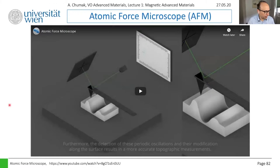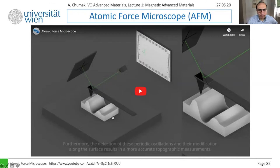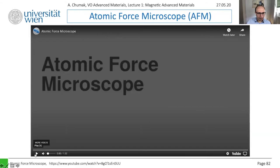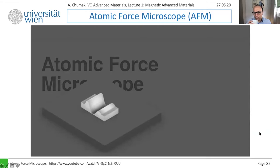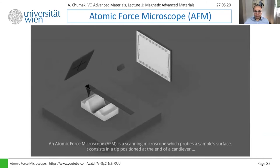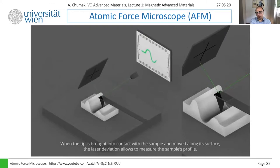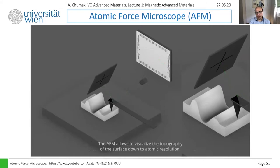First, I would like to speak about magnetic force microscopy (MFM). This is nothing other than an adapted atomic force microscope. The technique probes the surface using a tip. An important aspect is getting the position of the tip, and people use an optical approach — a laser is shone on it and reflected, giving the position of the tip with very high accuracy. In such a way you can measure roughness on the atomic scale.